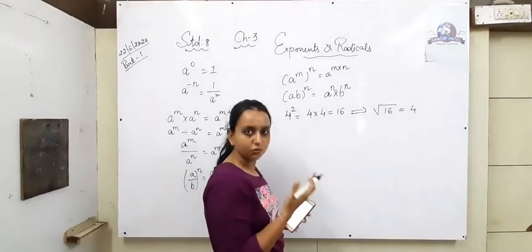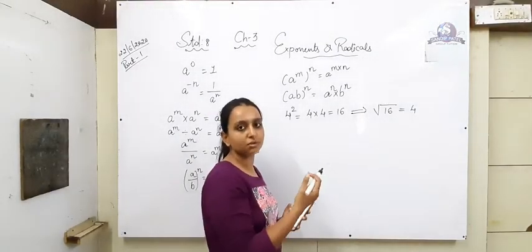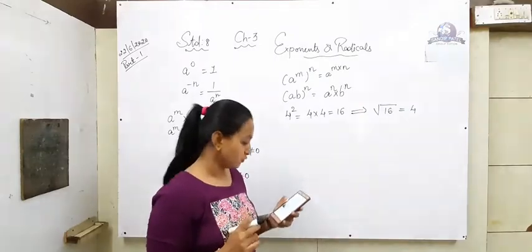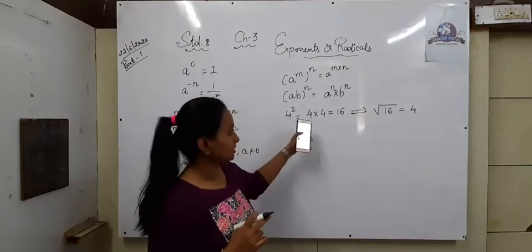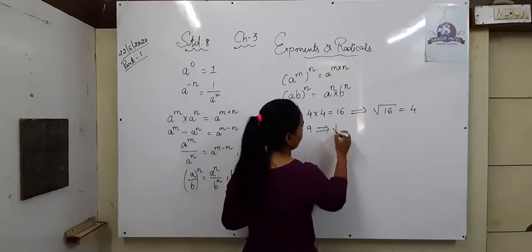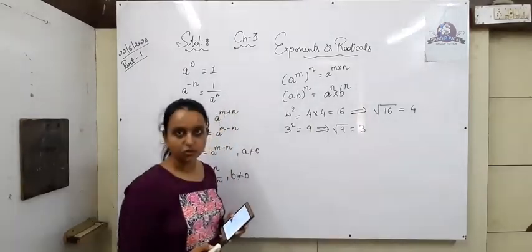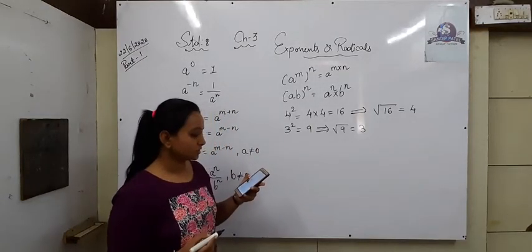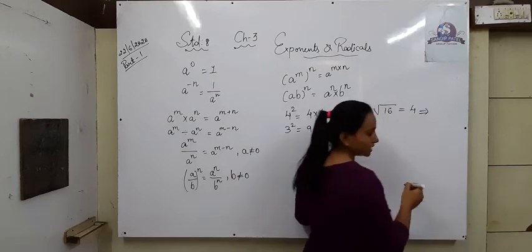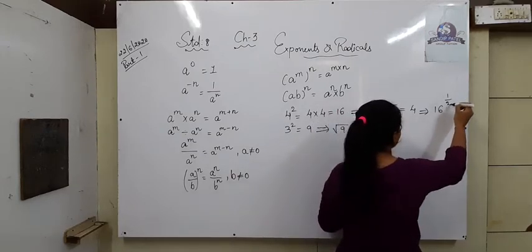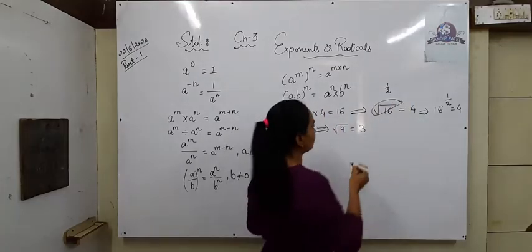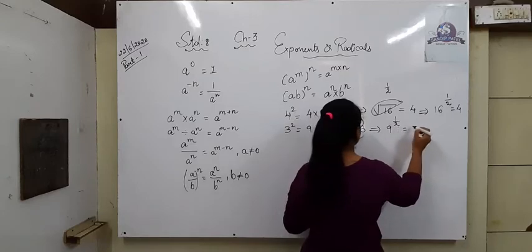Square means multiplying the same number again. Square root means finding out which number multiplied by itself gives that number. Sixteen — four squared is sixteen, and the square root of sixteen is four. Similarly, three squared is nine, and the square root of nine is equal to three. Now when expressing as rational numbers with exponents, the square root of sixteen can be written as sixteen raised to one upon two, which equals four. The square root means a half power. Similarly, nine raised to one upon two equals three.